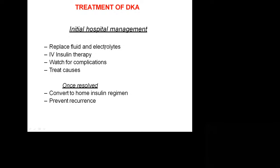Treatment of DKA: the initial hospital management is to replace fluids and electrolytes first — we are not concerned with acidosis or hyperglycemia initially; our first focus is fluid, second is electrolytes. Then start insulin, watch for complications, and treat the cause. Once resolved, convert to home insulin regimen and prevent recurrence. It is advisable to discharge patients on subcutaneous insulin regimen rather than starting oral hypoglycemics right away, as this can cause recurrence of DKA.